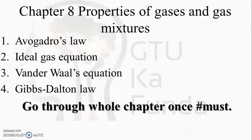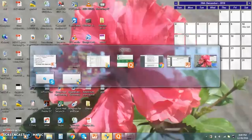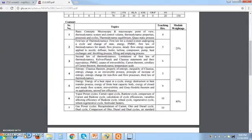For chapter 8, properties of gases and gas mixtures — go through this chapter thoroughly because they can ask anything from it and skipping it means losing seven marks. Avogadro's law, Gibbs-Dalton law, Van der Waals equation, and the ideal gas equation are all easy to understand — you have already learned these in class 11 and 12 chemistry. Do not skip a single question or theory from this chapter; just read it once and you can get full marks.